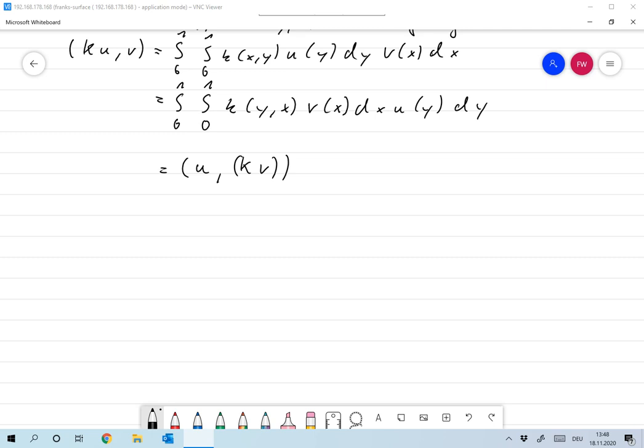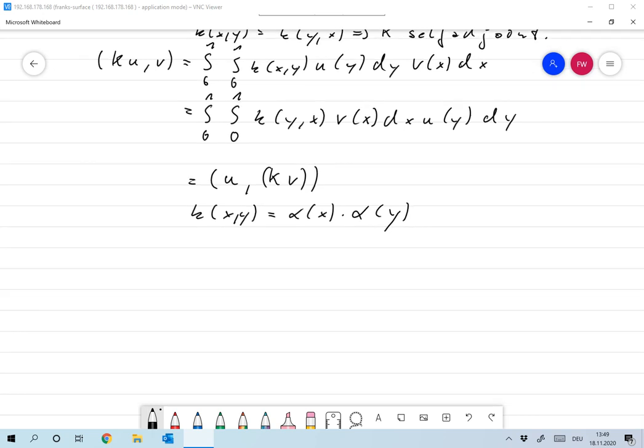Now what would be typical examples for that? For example, we could set k(x,y), excuse me, equal to α(x) times α(y). And in that case, of course, that would be symmetric. And the sum of products of the form αⱼ(x) times αⱼ(y) would, of course, also be symmetric. So all these produce examples for self-adjoint operators.